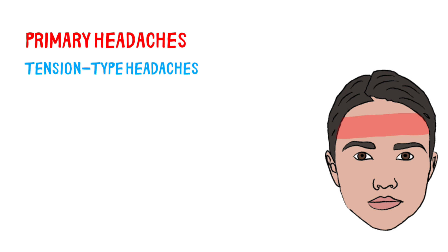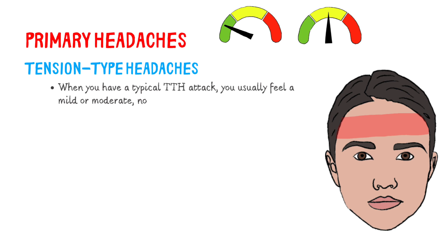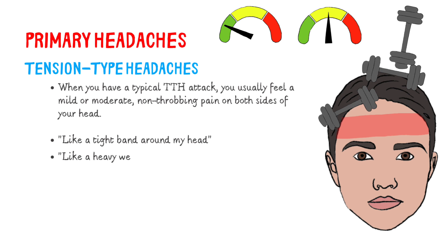TTH is the most common headache and common neurological disorder in the community. When you have a typical TTH attack, you usually feel a mild or moderate, non-throbbing pain on both sides of your head. Rarely, episodes of TTH may be unilateral, severe, or throbbing. Patients may describe TTH pain as like a tight band around my head or like a heavy weight on my head and shoulders.